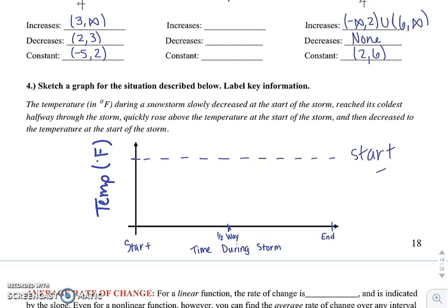The first thing it says is slowly decreased at the start of the storm, reached its coldest halfway through. So that's the coldest temperature it reached.